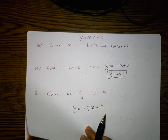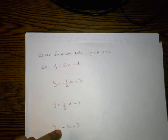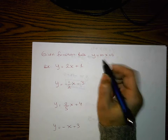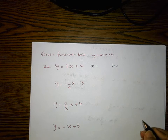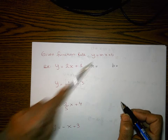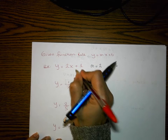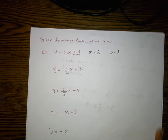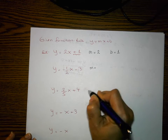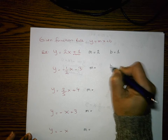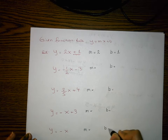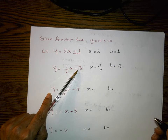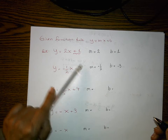Let's move on to a different type of question: given the function rule, can you identify the slope and the y-intercept? M is always the value that multiplies the x. So if we have 2x plus 1, m equals 2 and b equals positive one. Try the other problems, pause it, and then check your answers. The slope for the next one is negative one-half and the y-intercept is negative three.